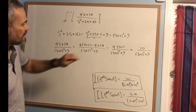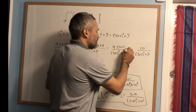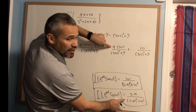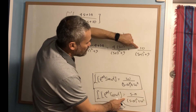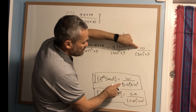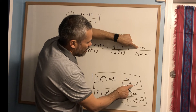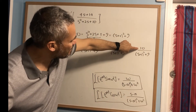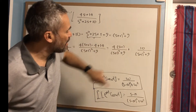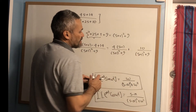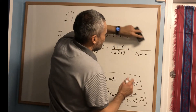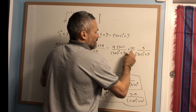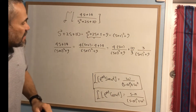The first term already matches the cosine formula with a = -1. For the second term, ω² = 9 so ω = 3, but we have 10 instead of 3 in the numerator. We rewrite 10 as (10/3) times 3 to match the form ω/((s-a)²+ω²).